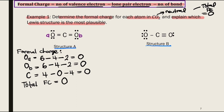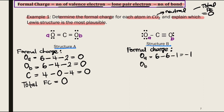Next, let's calculate the formal charge for Structure B. We label the two oxygen atoms A and B again. For oxygen labeled A: 6 minus 6 minus 1 gives negative 1. For oxygen labeled B: 6 minus 2 minus 3 gives positive 1.